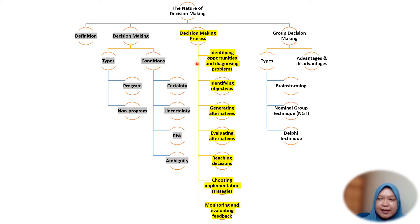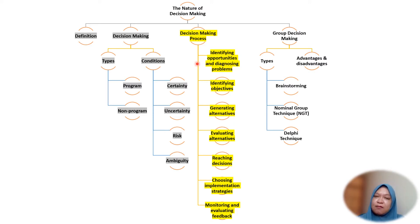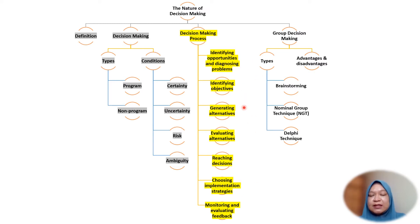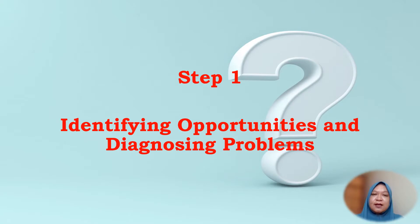Every day we make decisions, whether you work as a manager, worker, employee, or even as a student — you still have to make decisions in our life. Basically, in the decision making process there are seven steps. Before we come up with solutions, there are earlier steps we have to go through.